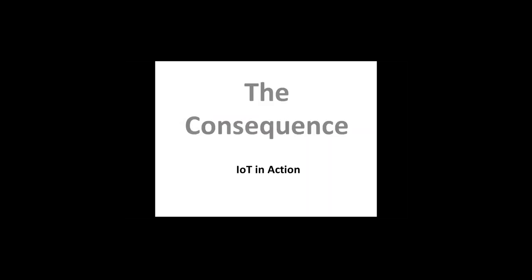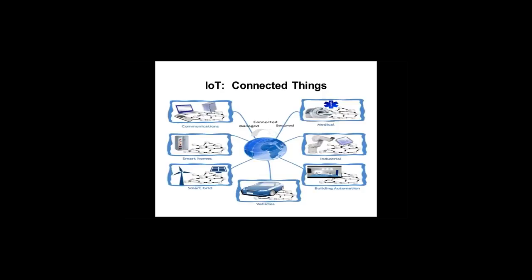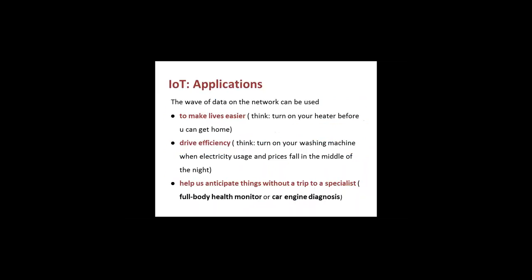Now we will talk about the consequences of IoT. Everything will be connected — there will be industrial applications, building automation, and medical applications. For example, an IoT-enabled car continuously senses information and sends its status to the manufacturer. A patient fitted with a monitoring device will have their data continuously transmitted to the medical fraternity. Every human activity that needs monitoring, data transmission for remote decision-making, and remote implementation of decisions — that is where IoT comes into play. IoT applications will take different forms, and there are applications which will make our lives easier.